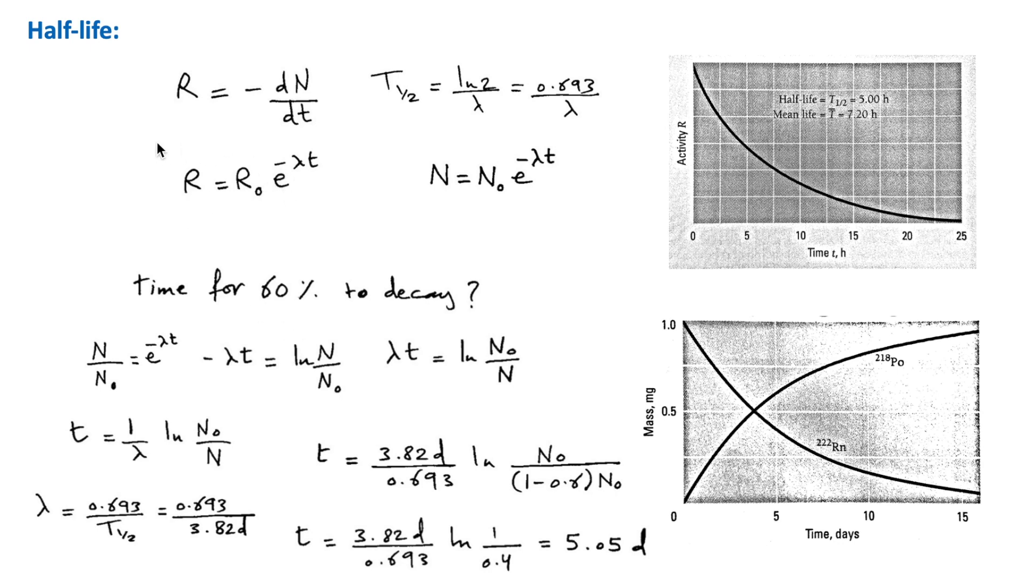The fact that radioactive decay follows an exponential law implies that this phenomenon is statistical in nature. Every nucleus in a sample of a radionuclide has a certain probability of decaying, but there is no way to know in advance which nuclei will actually decay in a particular time span. But if the sample is large enough, so it contains many nuclei, then the actual fraction that decays in a certain time will be very close to the probability for any individual nucleus to decay.